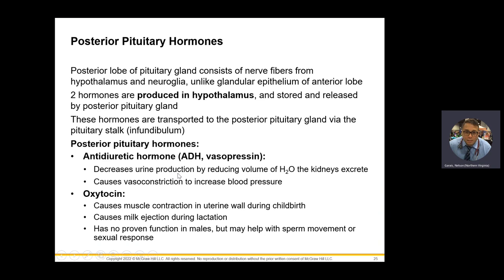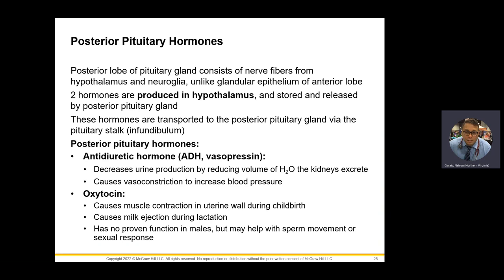Posterior pituitary — there are only two hormones: ADH and oxytocin. ADH is also known as vasopressin because antidiuretic hormone also deals with blood pressure. If I tell my kidneys to hold the water and not pee, blood pressure goes up — more water, it goes up. If you get a water pill, you pee a lot, and blood pressure goes down. Oxytocin stimulates the uterine wall for childbirth and has a milk injection effect during lactation — because when a baby comes out, it needs milk almost immediately.